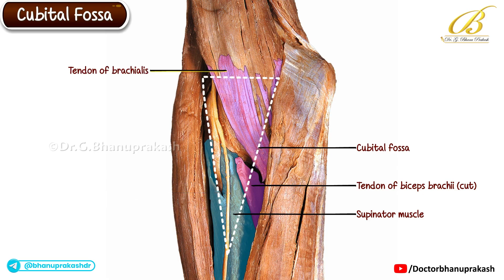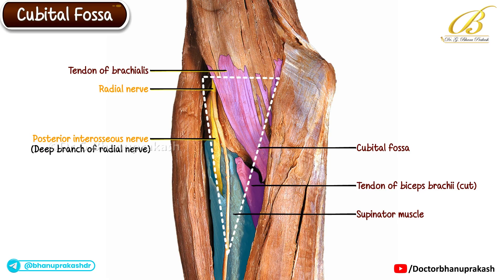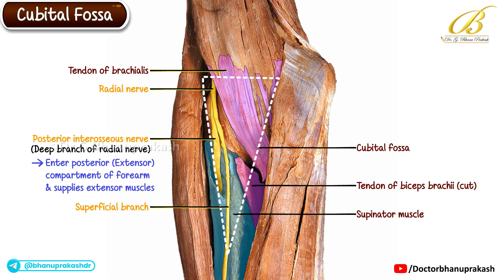Adjacent to the tendon of the brachialis, the radial nerve can be observed dividing into its two terminal branches: the posterior interosseous nerve, also known as the deep branch of the radial nerve, and the superficial branch. The posterior interosseous nerve passes through the supinator muscle to enter the posterior extensor compartment of the forearm, where it supplies the extensor muscles. With this, the demonstration of the cubital fossa is complete, showing its layers from superficial to deep, the boundaries, floor muscles, and the important neurovascular structures that pass through this vital anatomical region.